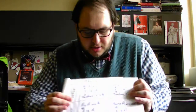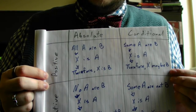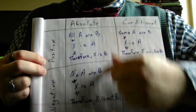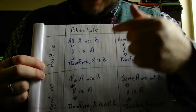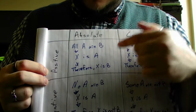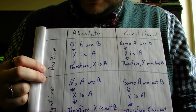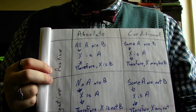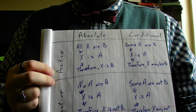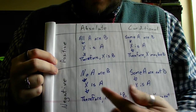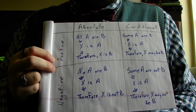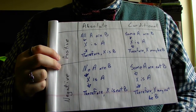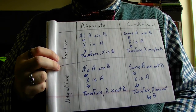We can chart these four main types of syllogisms along a graph. A positive absolute would be: all A are B, X is A, therefore X is B — establishing a positive condition through absolutes. A negative absolute would be: no A are B, X is A, therefore X is not B — establishing a non-condition. If there's even one A that is B, this statement and this syllogism are unreliable.